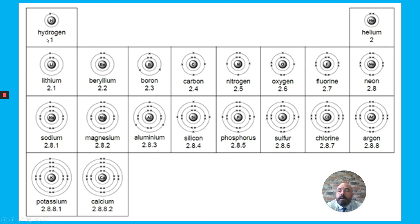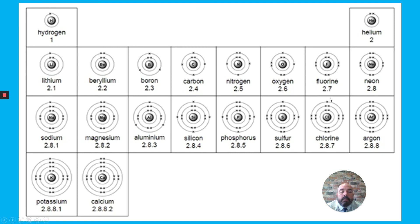Here are the first 20 electron arrangements. Hydrogen has one electron in its outer shell. Helium has two — that first shell is full. Lithium has three, with the third electron going into the second shell. An electron is added each time until we reach neon with notation 2, 8 — both first and second shells full. Then we move to a third shell. In group one, lithium, sodium, and potassium all have one electron in the outer shell. In group seven, fluorine and chlorine have seven electrons in their outer shell, confirming Mendeleev's groupings were correct.